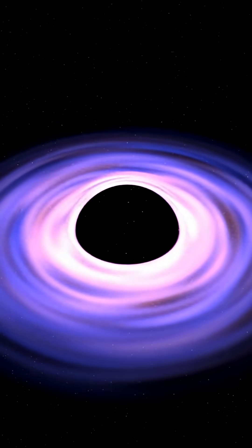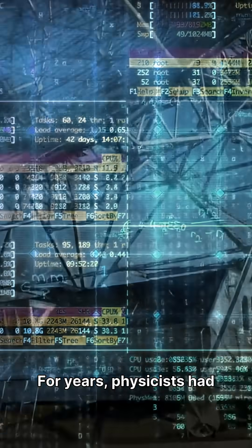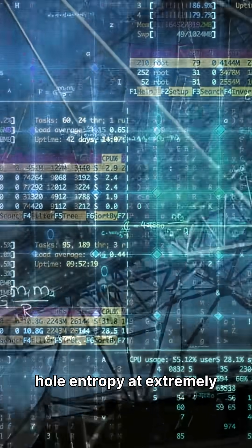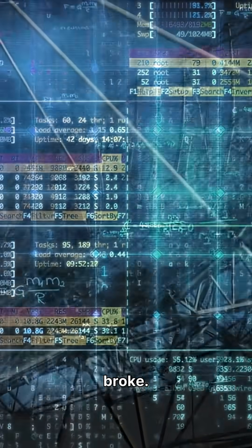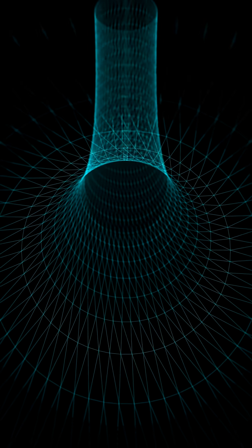Black holes just proved their quantum nature, and the answer involved infinite wormholes. For years, physicists had a problem: when they calculated black hole entropy at extremely low temperatures, the math broke. Entropy went negative, which is physically impossible. The solution?